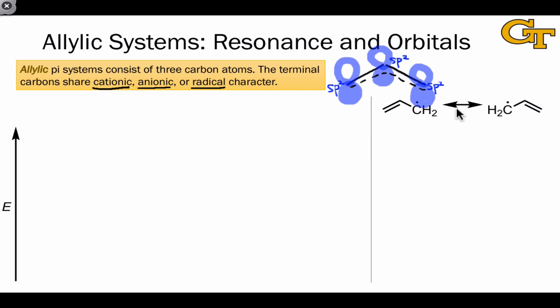Let's look first at the allyl radical, which is a neutral structure containing three pi electrons, two associated with the double bond, and one associated with the radical electron. There are two resonance structures of this molecule that differ in the location of the radical electron. These illustrate that radical electron density is shared between the two terminal carbons, a general theme we're going to see throughout this video.